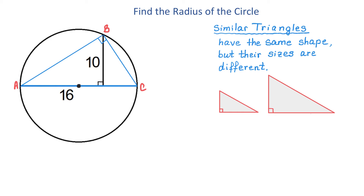When the shapes are the same, the corresponding angles have to be equal. For example, if in the smaller triangle the angle formed by the shortest side and the hypotenuse is 60 degrees, then in the bigger triangle, the angle formed by the shortest side and the hypotenuse also has to be 60 degrees. Then each of these two angles will measure 30 degrees.